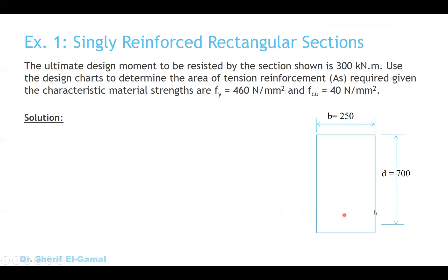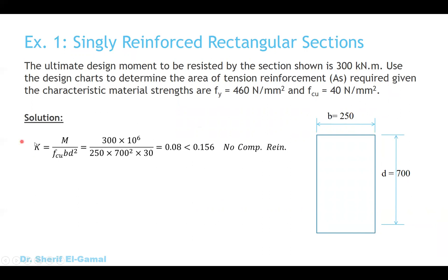Let's take an example. In this example the cross section of the beam has a width B of 250 and an effective depth D of 700. The ultimate moment M is 300 kilonewton-meter, and we are required to use the design charts to calculate the area of tension steel. FY yield is 460 megapascal and FCU is 40 newton per millimeter squared. First we calculate K to determine whether we need a singly or doubly reinforced rectangular section.